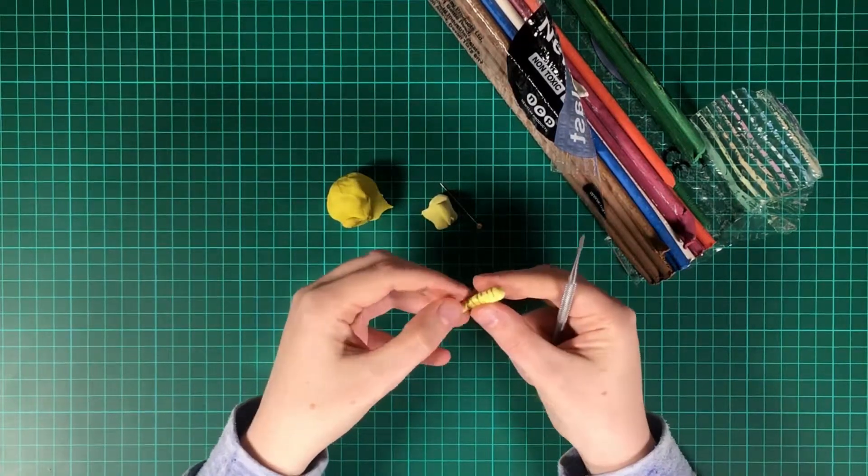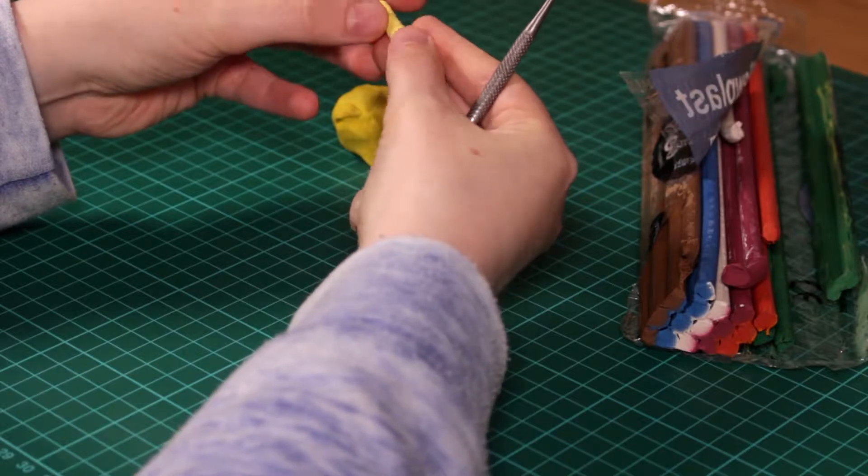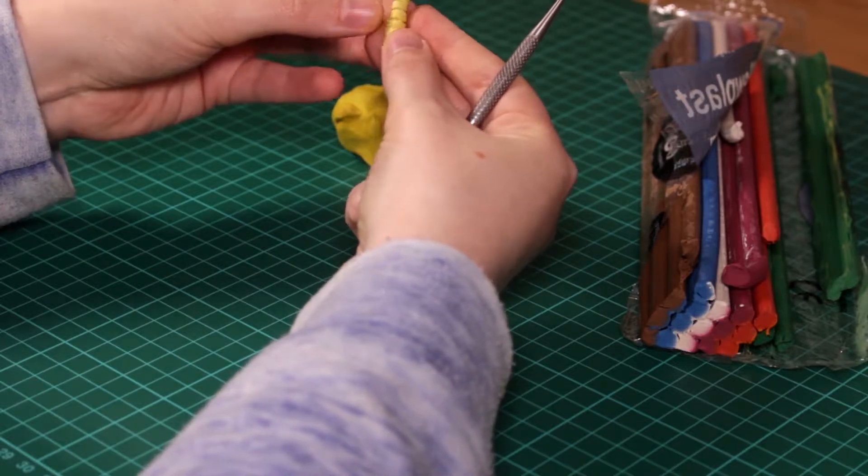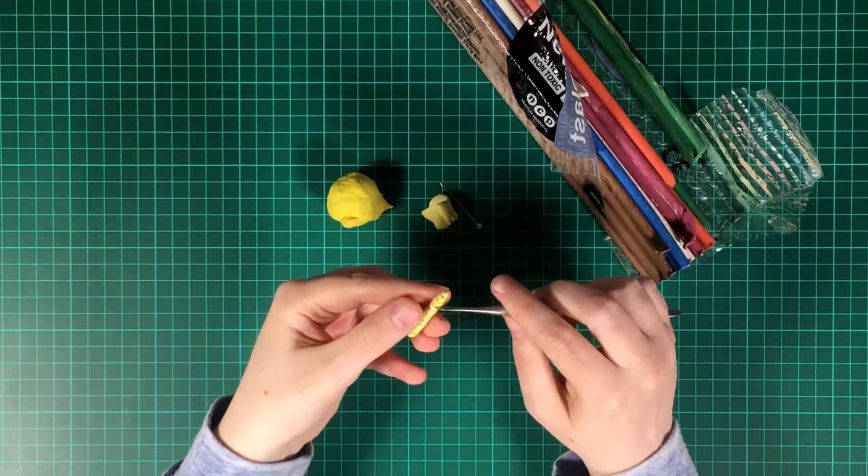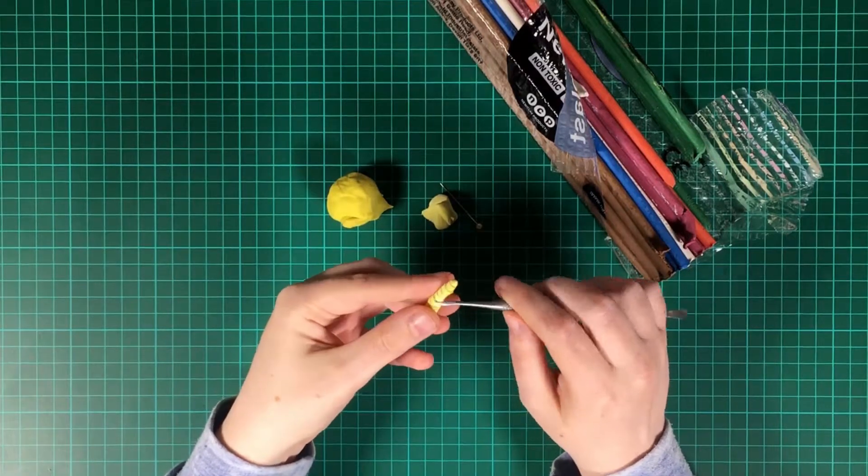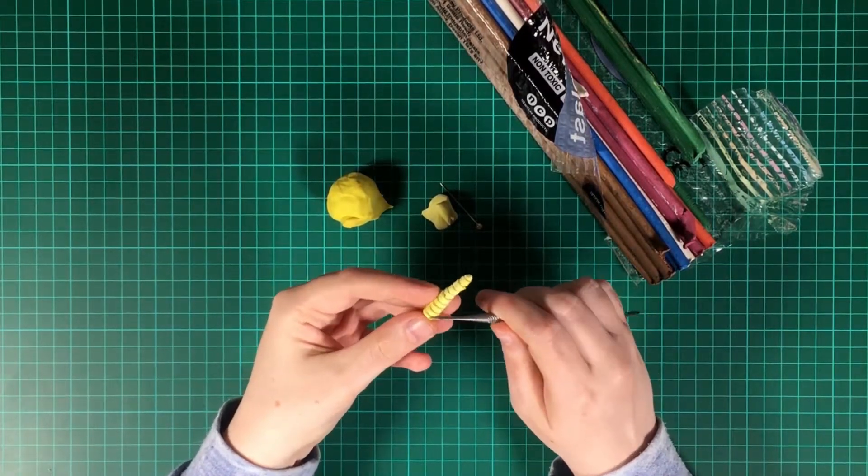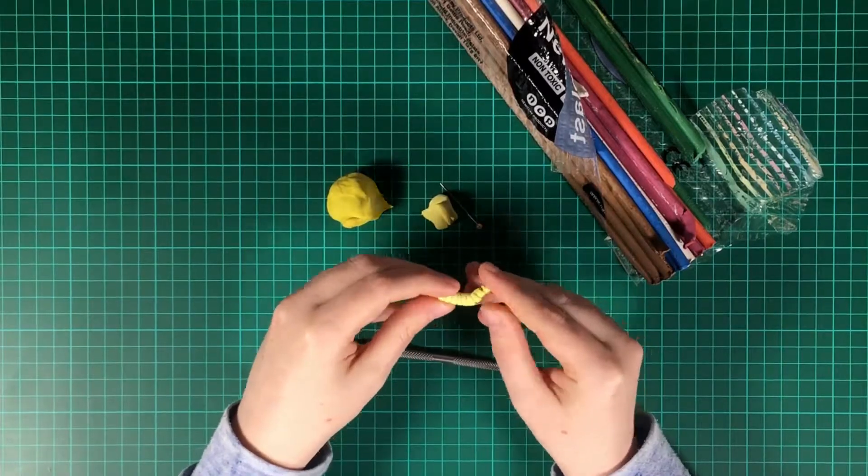Basically I'm using this tool to enlarge the rings around the body of the maggot, so I'm just pulling them out slightly. It gives the maggot a bit more flexibility as you can see here. It means that I'm able to bend it into all sorts of different wiggly maggot shapes.